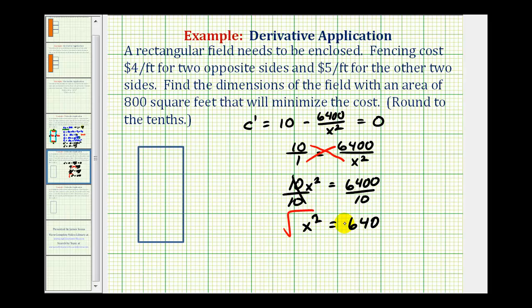Now we'll square root both sides of the equation. Remember, we only have to consider the principal square root, or the positive square root, since x represents a length. We want to round this to the nearest tenth, so x is approximately 25.3 feet.